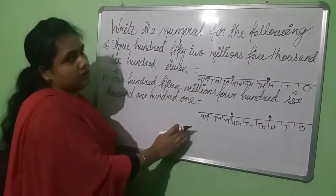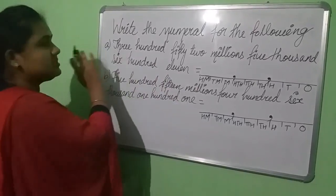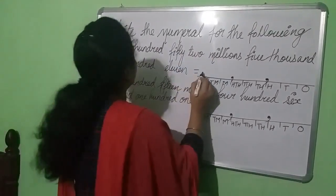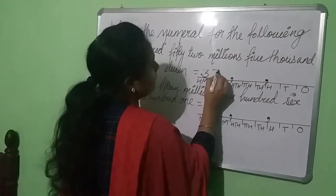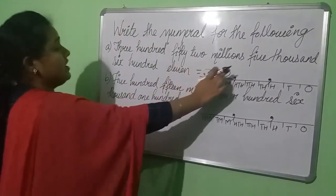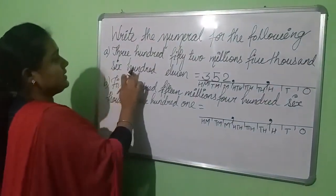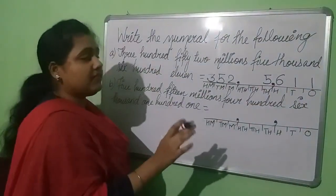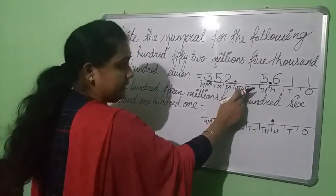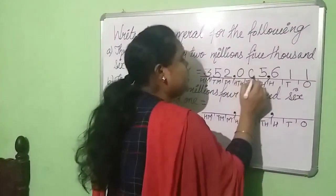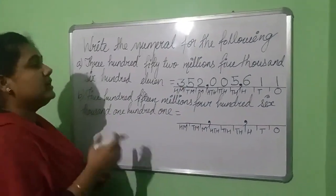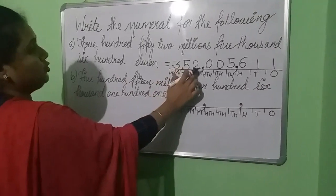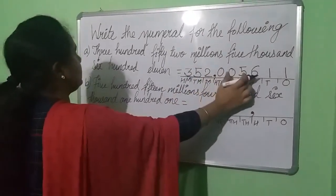I will instruct you to follow this. The first number name is 352,000,000 — three hundred fifty-two million, five thousand six hundred eleven. We don't have any digit for the 10,000 place and 100,000 place, so we are going to write 0 there. Let's read this number to confirm we have written the numeral right: 352,005,611.